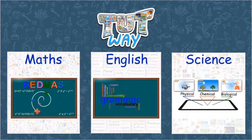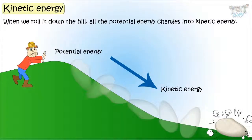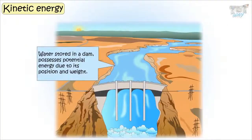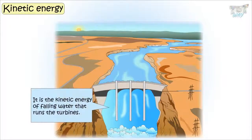Here is another example. Water stored up in a dam possesses potential energy because of its position and its weight, and it is the kinetic energy of the falling water that runs the turbine.